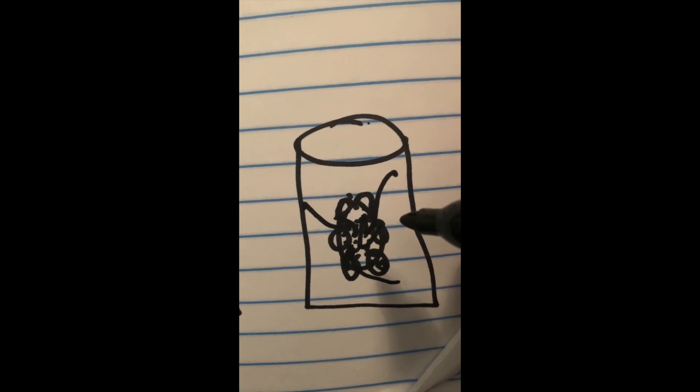The gummy bear is hypertonic to the hypotonic solution, so the water moves into the gummy bear to even out the salt and water concentrations. That's why the gummy bear gets bigger.